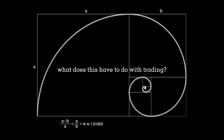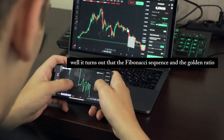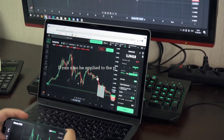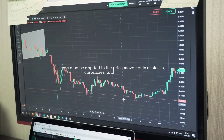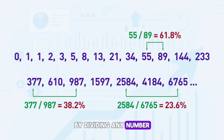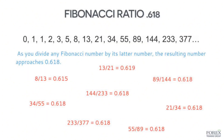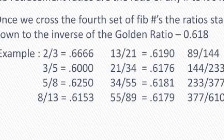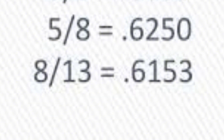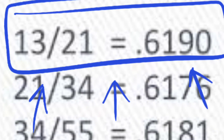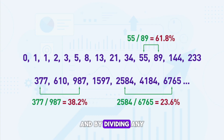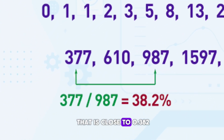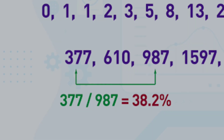But what does this have to do with trading? Well, it turns out that the Fibonacci Sequence and the golden ratio can also be applied to the price movement of stocks, currencies, and other assets. By dividing any number in a Fibonacci Sequence by the next one, you get a ratio that is close to 0.618, or the inverse of the golden ratio. For example, 8 divided by 13 is 0.615, and 13 divided by 21 is 0.619.